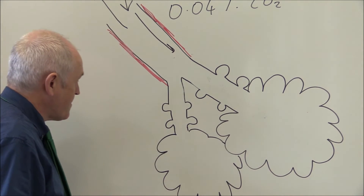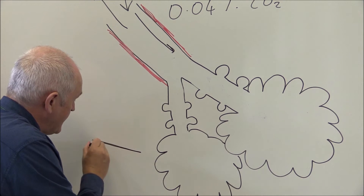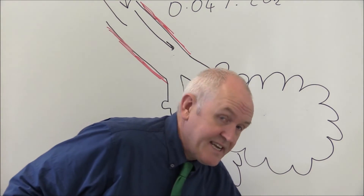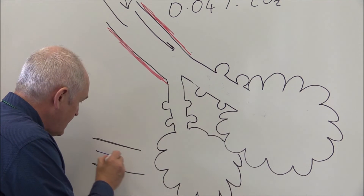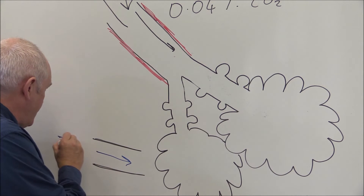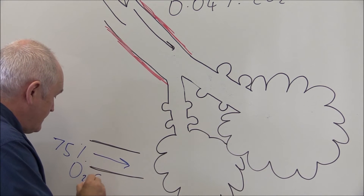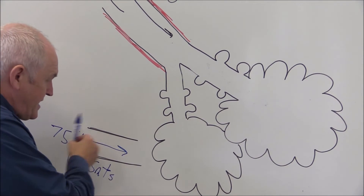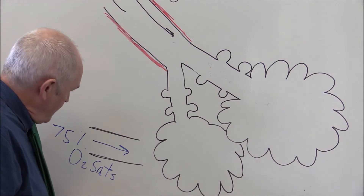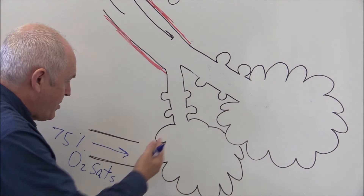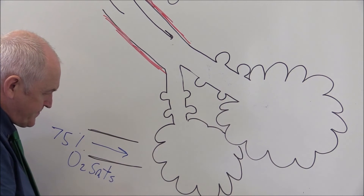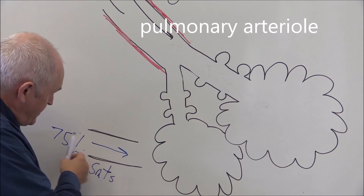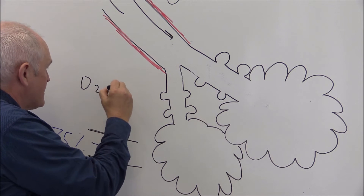Approaching an alveolus or air sac, what we have here is a branch of the pulmonary artery, and this branch is carrying relatively deoxygenated blood. Typically the oxygen saturations in this blood are going to be about 75% at rest — if you're exercising it can be lower. So relatively deoxygenated blood is being pumped from the right ventricle of the heart through the pulmonary arteries into a pulmonary arteriole approaching the alveoli. The oxygen in this blood is going to be relatively low.